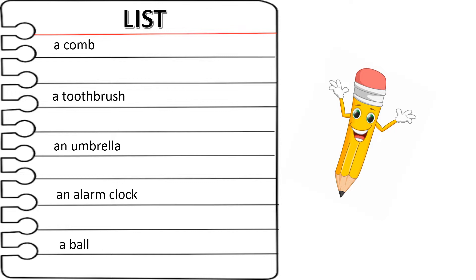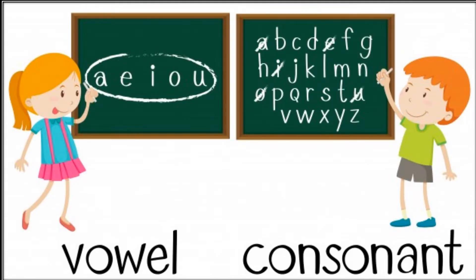Do you know why? Come on children, let us try and find out. As you have learnt, there are 26 letters in the English alphabet. Out of them, 5 letters — A, E, I, O and U — are called vowels. The rest are called consonants.